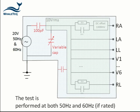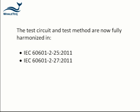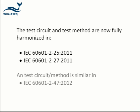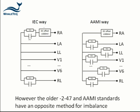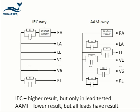The latest IEC standards require all mains frequencies to be tested, typically 50 and 60 Hz. The latest versions of 2-25 and 2-27 are fully harmonized for the test circuit and test method. Also, 2-47 has the same test method, except for the test voltage and frequency. However, the older version of 2-47 and the AIME standards have an opposite approach to create the imbalance. The IEC version has the imbalance in one lead only, while the AIME version has the impedance in each lead except one. The IEC version generally has higher results but only in the leads tested, while the AIME version has lower results but in all leads.